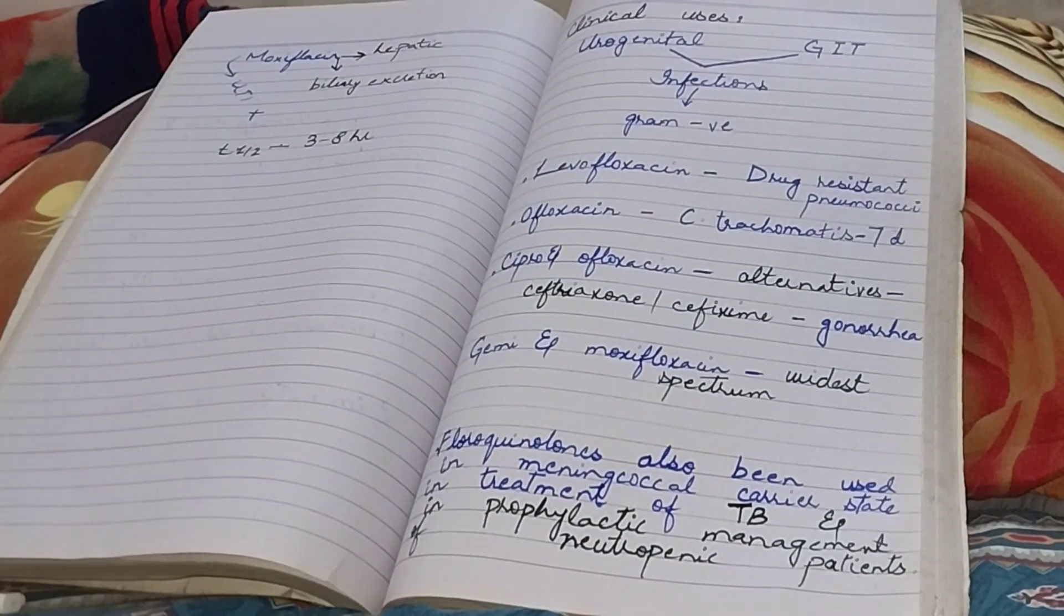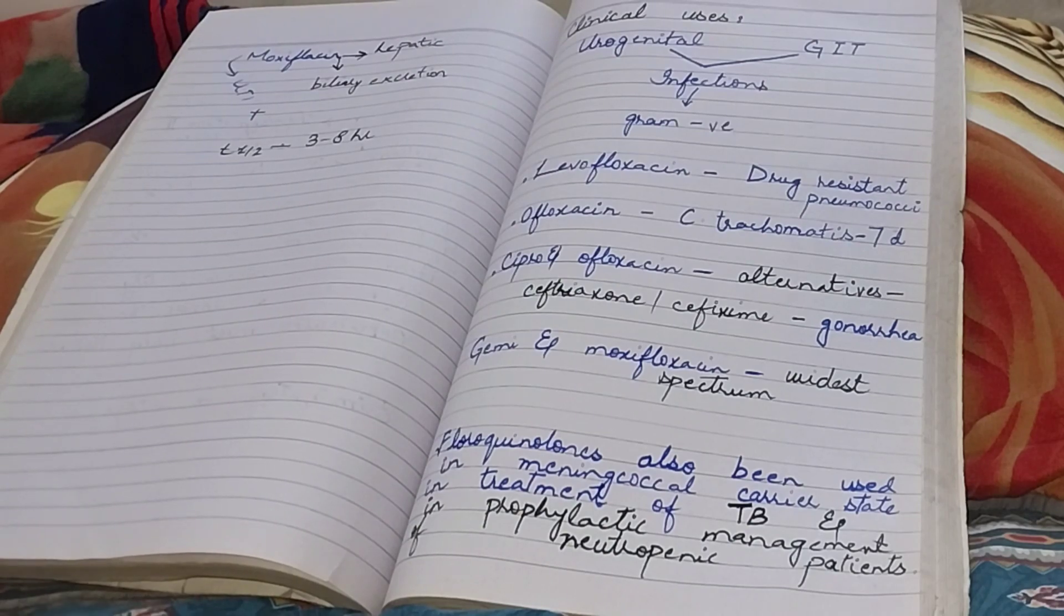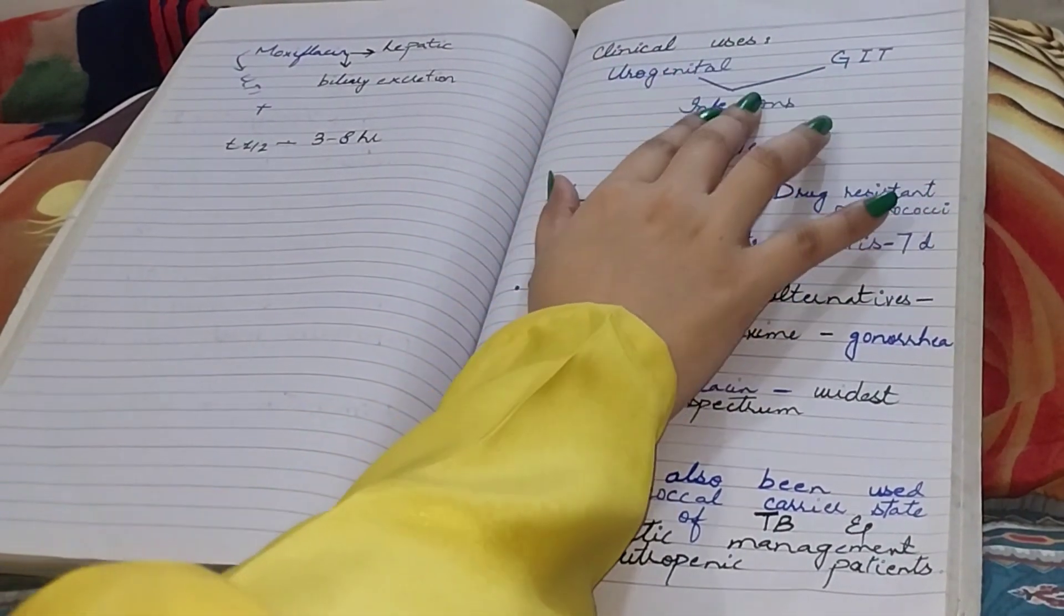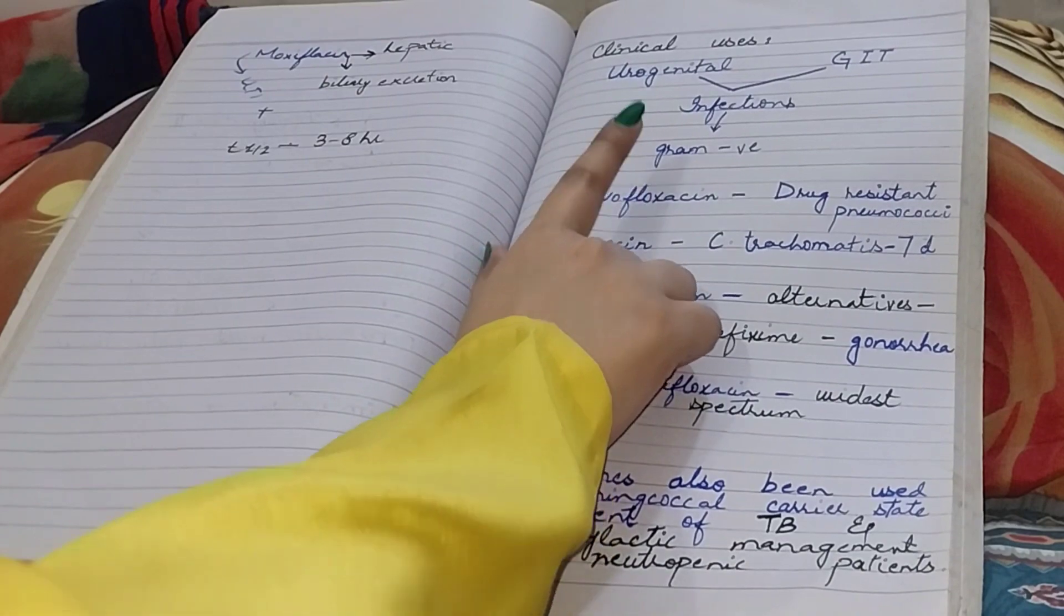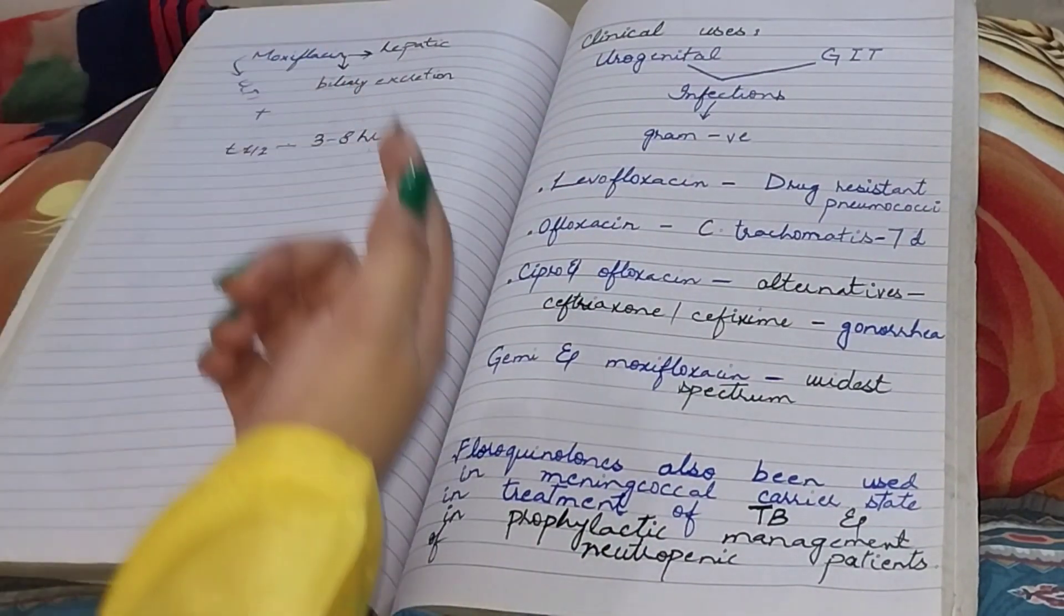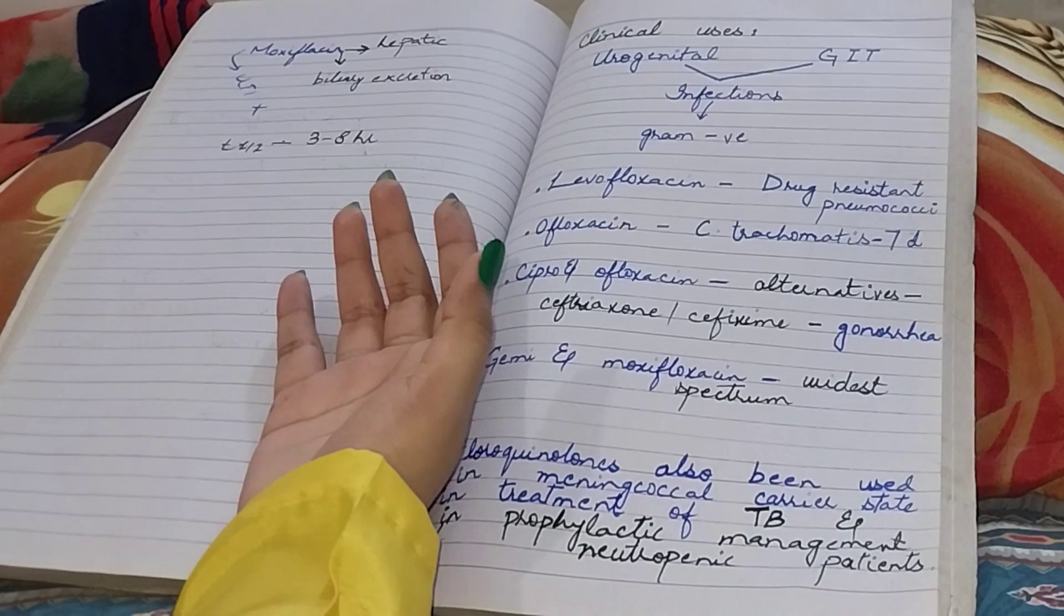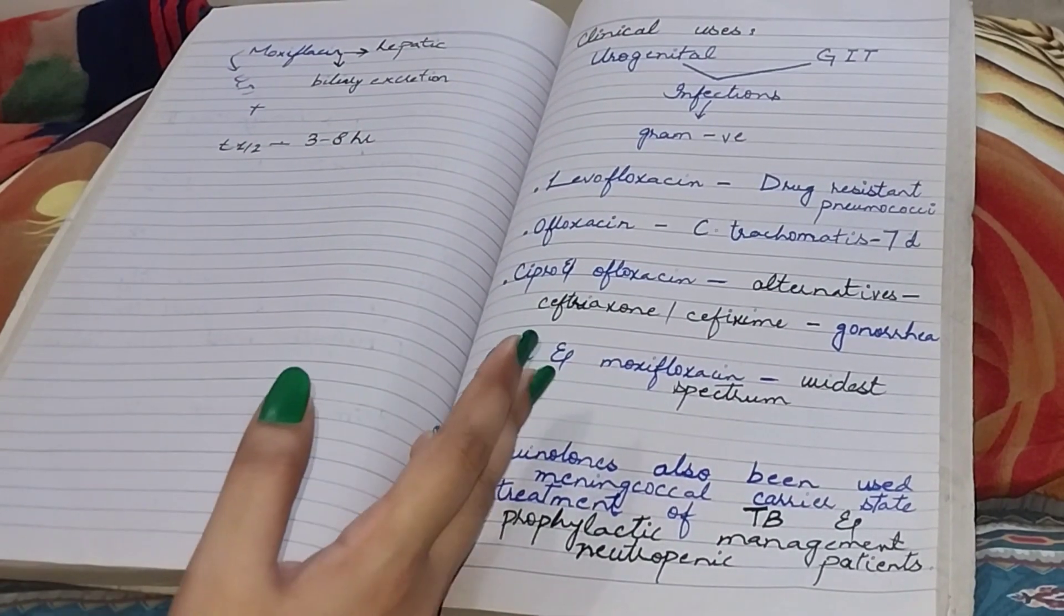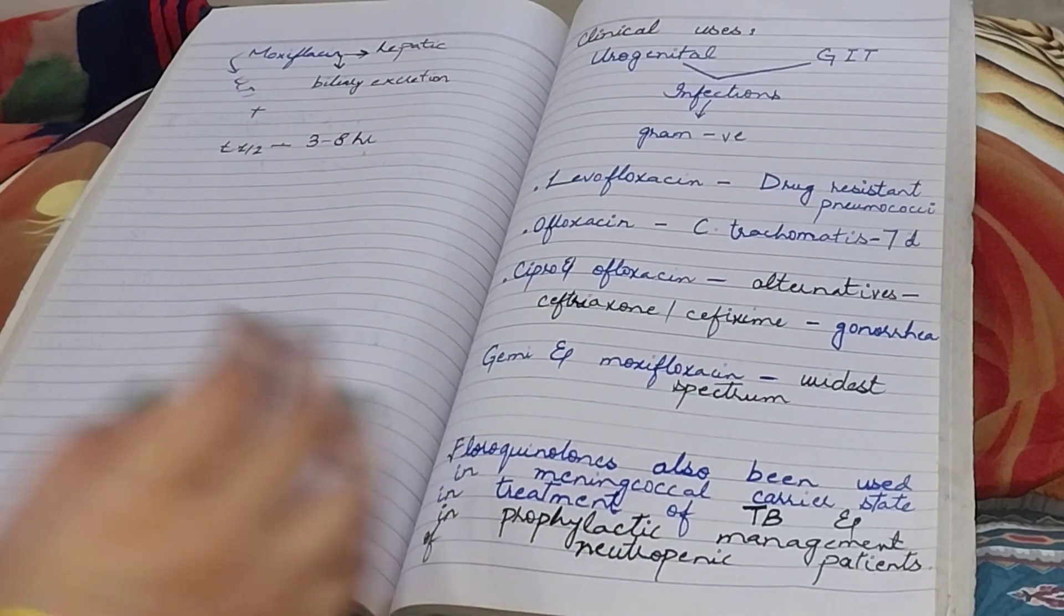Now let's see the clinical uses of quinolones. Quinolones are effective in treatment of infections of urogenital and GIT tract that are caused by gram negative organisms including gonococci, E. coli, Klebsiella pneumoniae, C. jejuni, Enterobacter, Pseudomonas aeruginosa, Salmonella, and Shigella species.